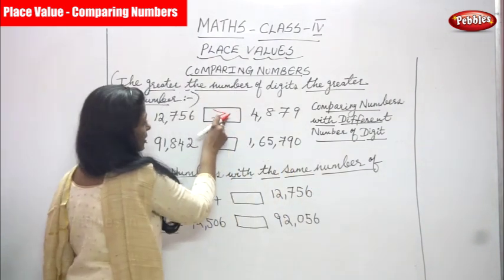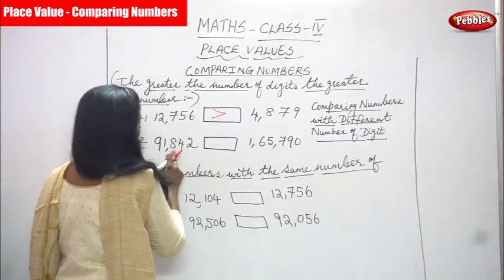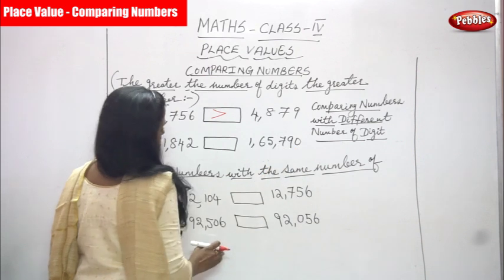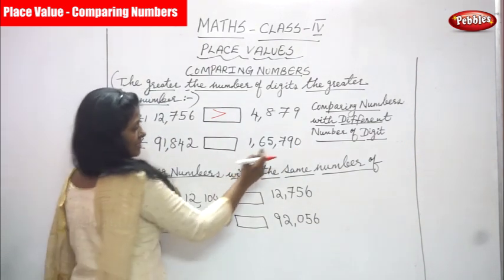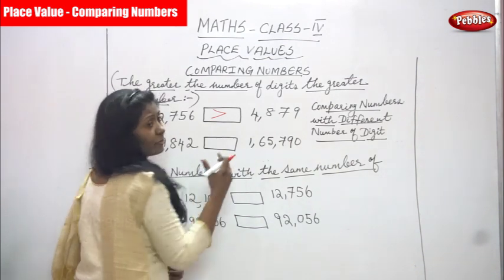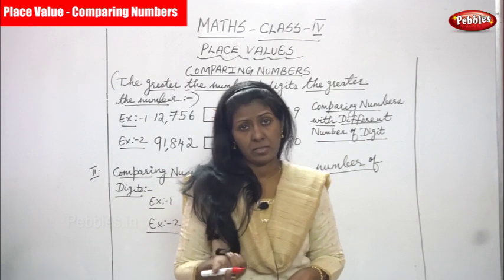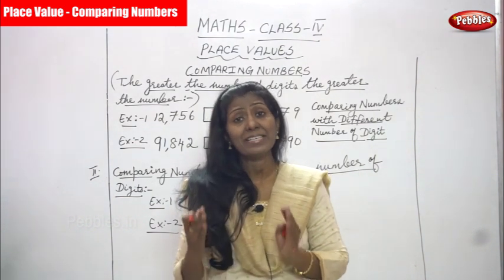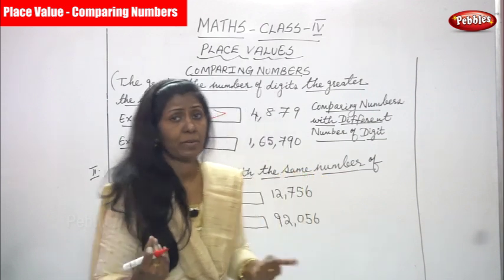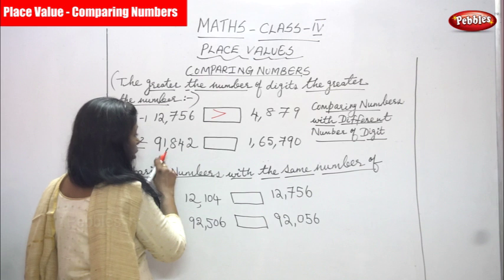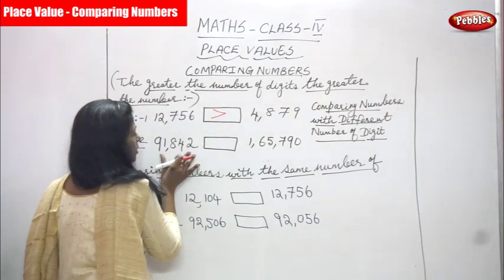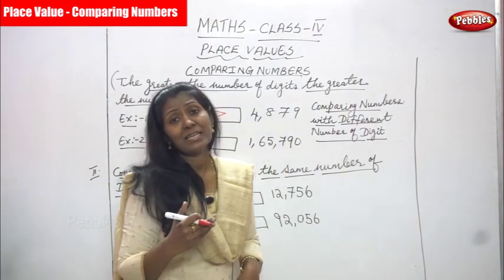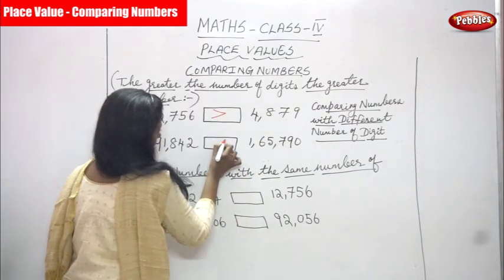Which is greater means five digits — it is the greater number. So you have to put the sign according to the greater number. Next: 91,842 is one number and 1,65,790 is another number. These are different numbers with different digit counts. How many digits: one, two, three, four, five — so five digits here, and one, two, three, four, five, six — six digits here. Six digits is greater, so you put the sign according to the greater number.